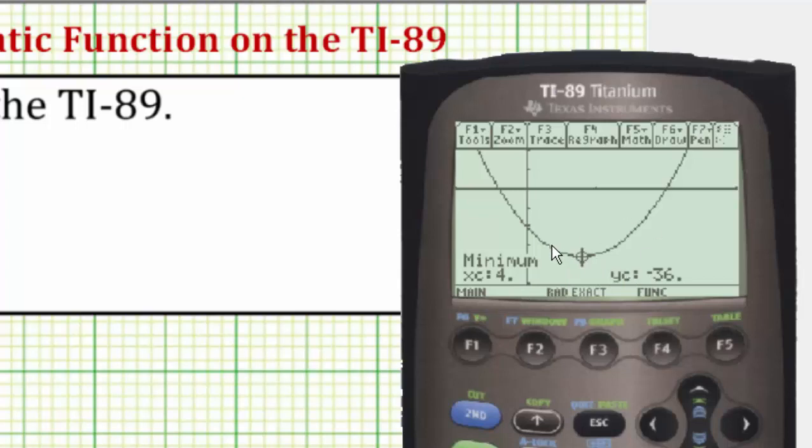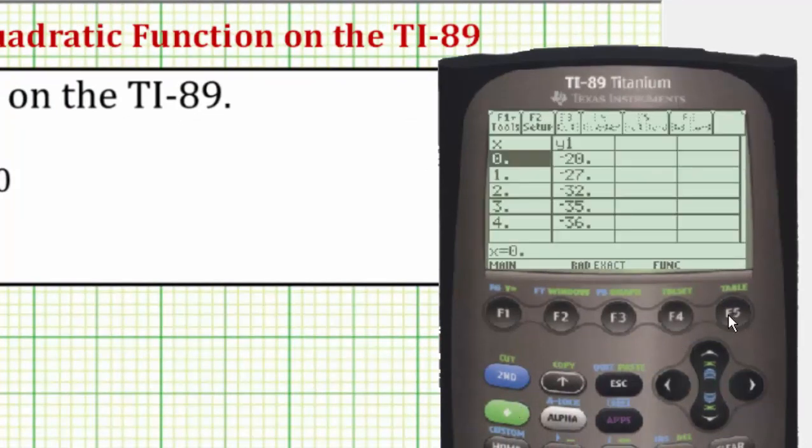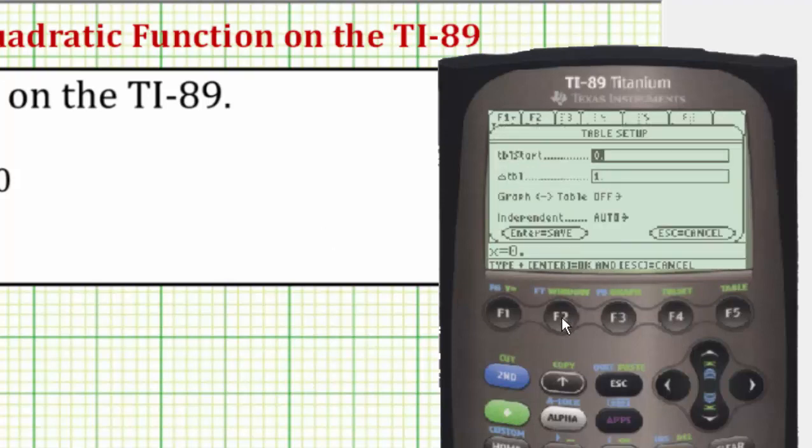Now to find additional points on the parabola, we can use the table feature by pressing diamond F5. Before we look at the table though, let's look at the table set by pressing F2. Notice here the table start is at zero. The change in the table is by ones, which is good. Notice down here it says automatic. This means the table will be automatically populated. So we can scroll up and down and determine as many points on the graph as we wish.